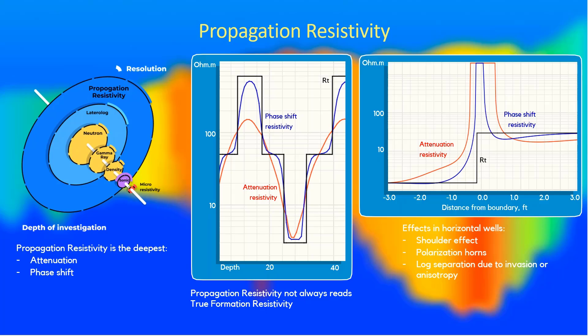In conventional heavy oil or carbonate reservoirs, when gamma ray contrast in the target is muted or unsuitable for geosteering, or when exiting the target may lead to a sidetrack, you need to use additional logs such as propagation resistivity. Propagation resistivity is different from, for example, lateral log resistivity, and has much bigger depths of investigation compared to gamma or neutron density logs.